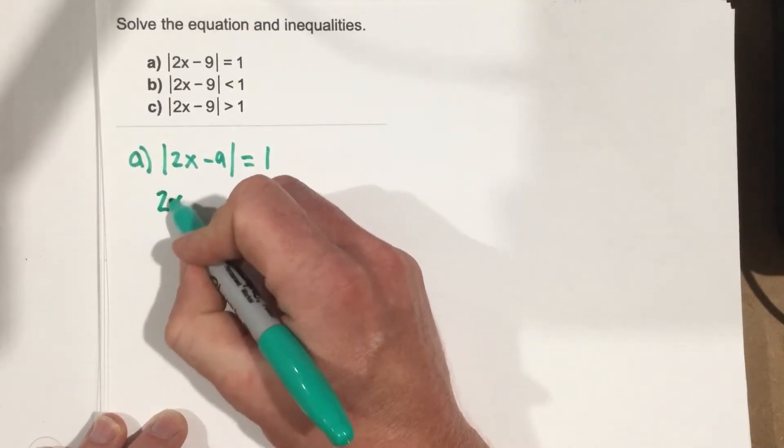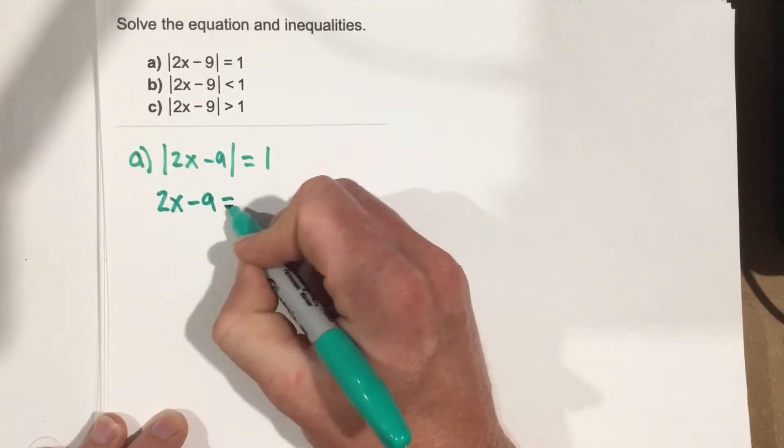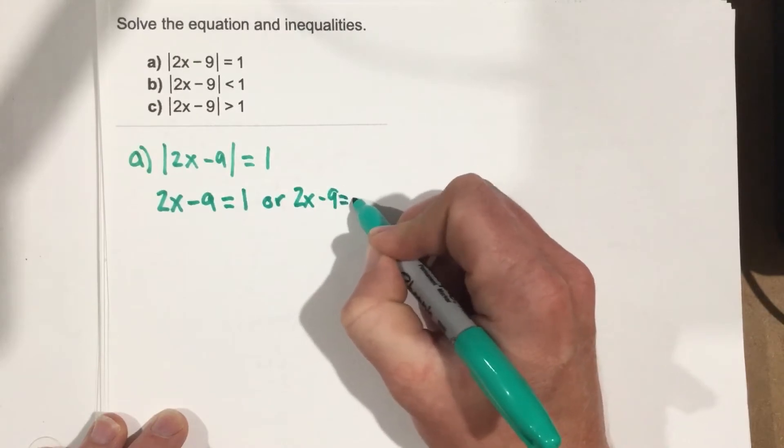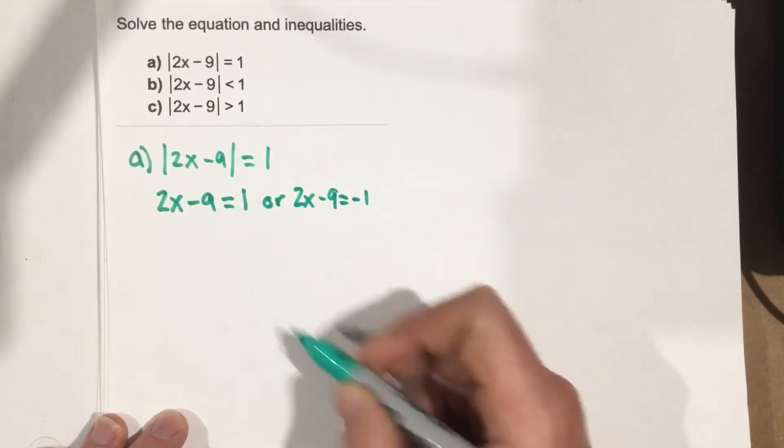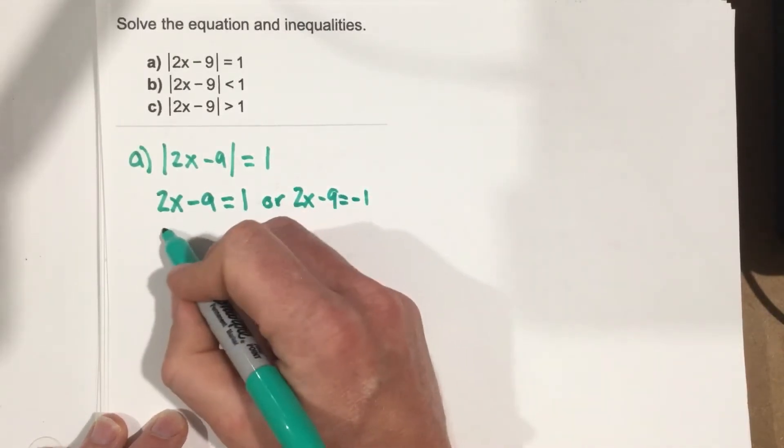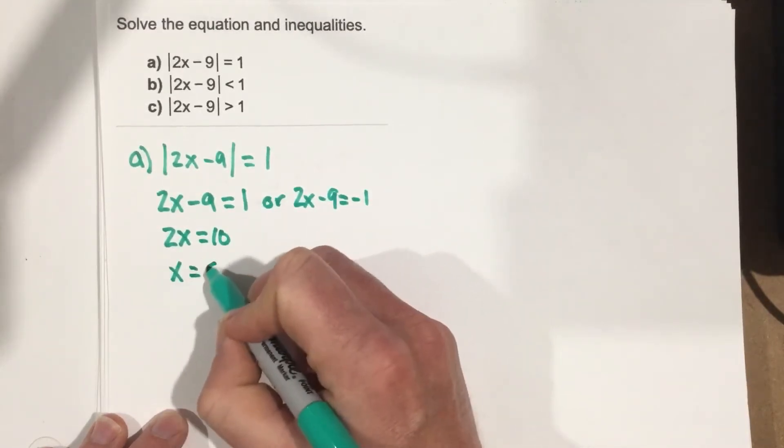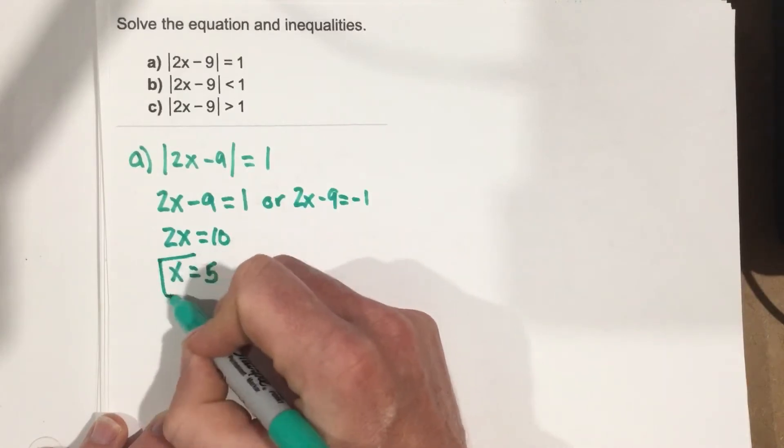So we can say 2x minus 9 equals 1 or 2x minus 9 equals negative 1. Let's add the 9 over. We get 2x equals 10. Divide by 2, you get x equals 5. So that's one solution.